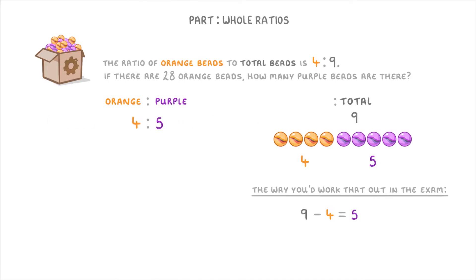Then because the question tells us that we have 28 orange beads, we can place the 28 underneath the four and figure out that it's been scaled up by a factor of seven, which means that we also need to multiply the five by seven to find out that there must be 35 purple beads.